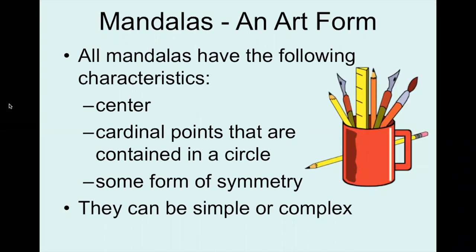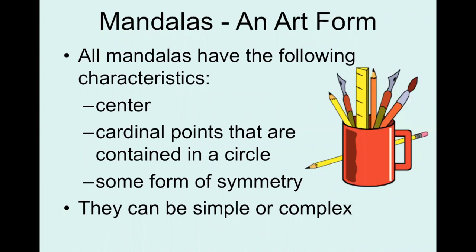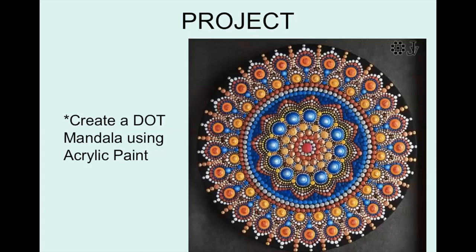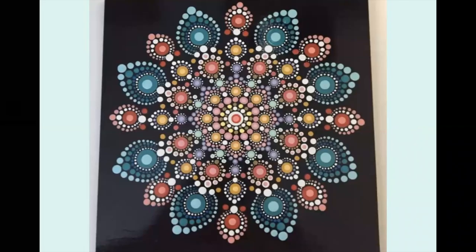Now let's talk about mandalas as an art form. Mandalas should have the following characteristics: a center, a point contained in a circle, and some form of symmetry — in this instance, radial symmetry — and they can be simple or complex. For our project, we're going to be creating a dot mandala using acrylic paint.